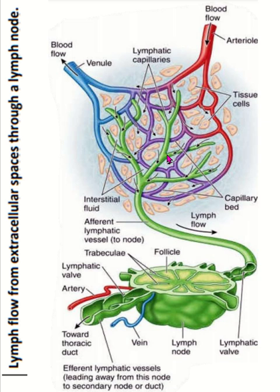The lymph capillary has a unique structure: overlapping endothelial cells are present, and this allows the entry of large molecules like proteins, cellular debris, and pathogens that blood capillaries cannot effectively reabsorb. This helps in clearing the extracellular space of substances that would otherwise accumulate there.